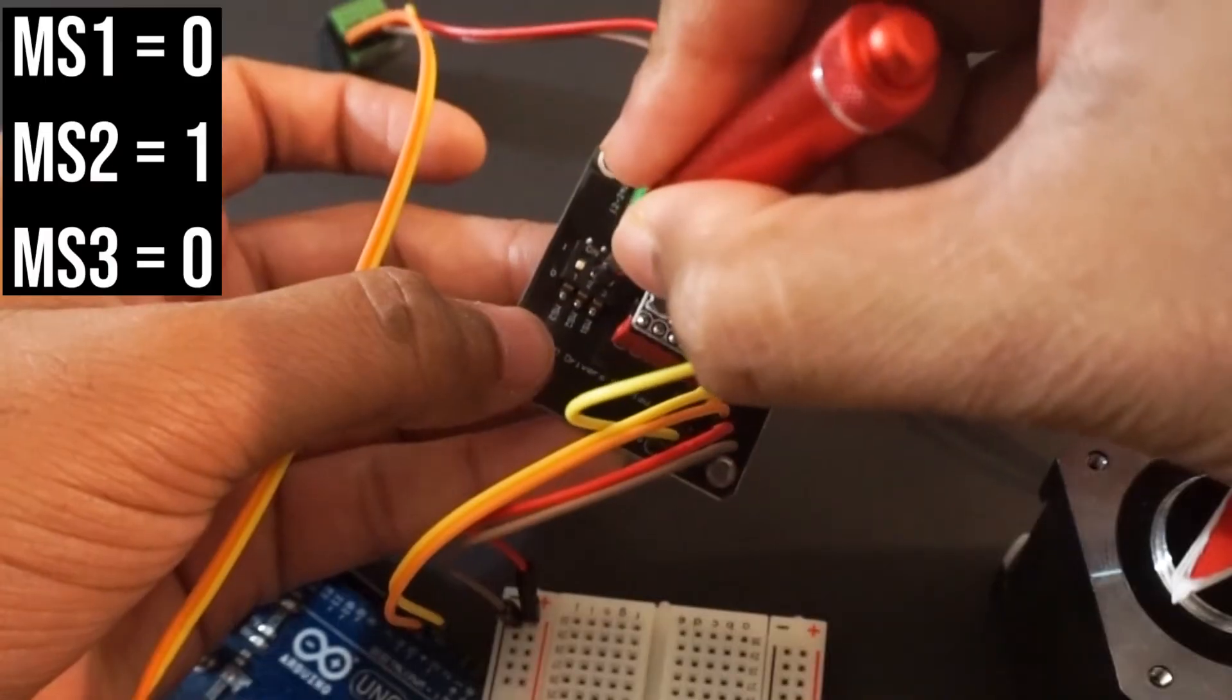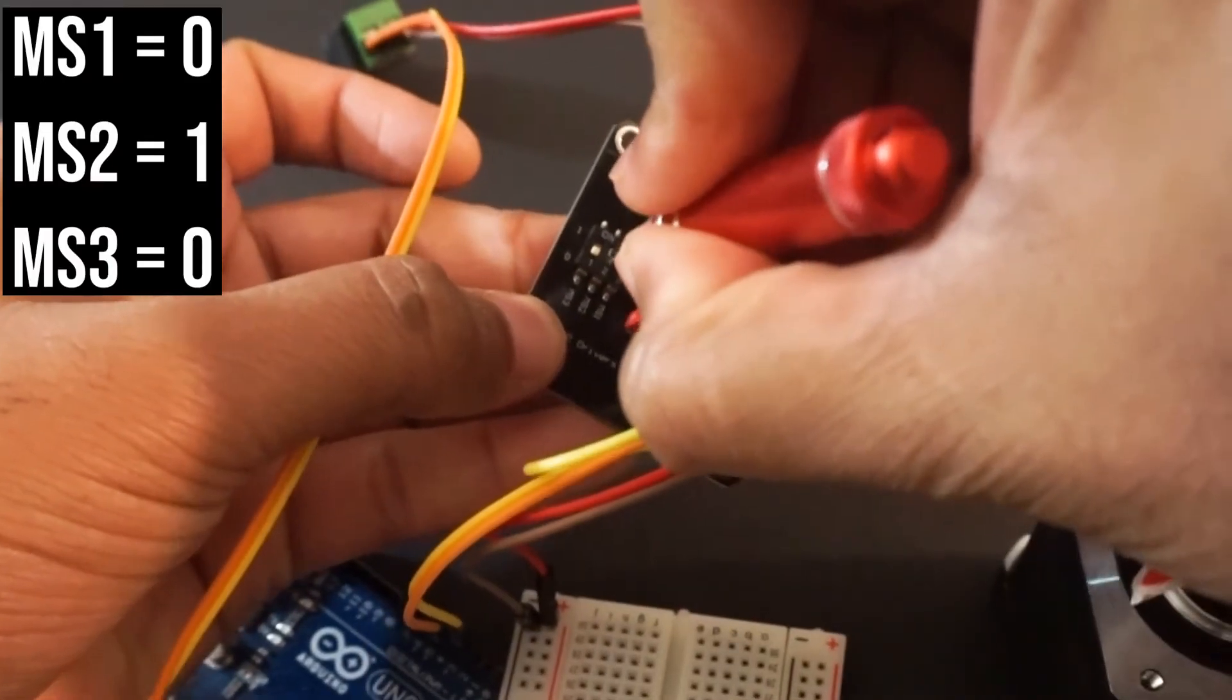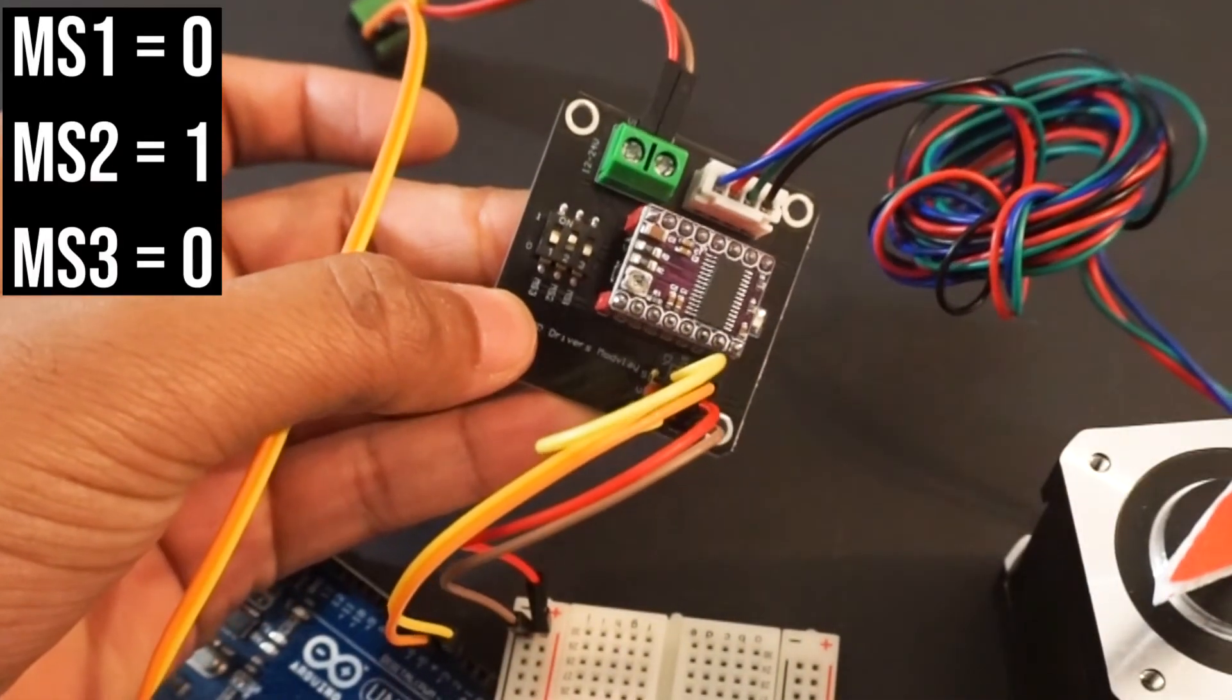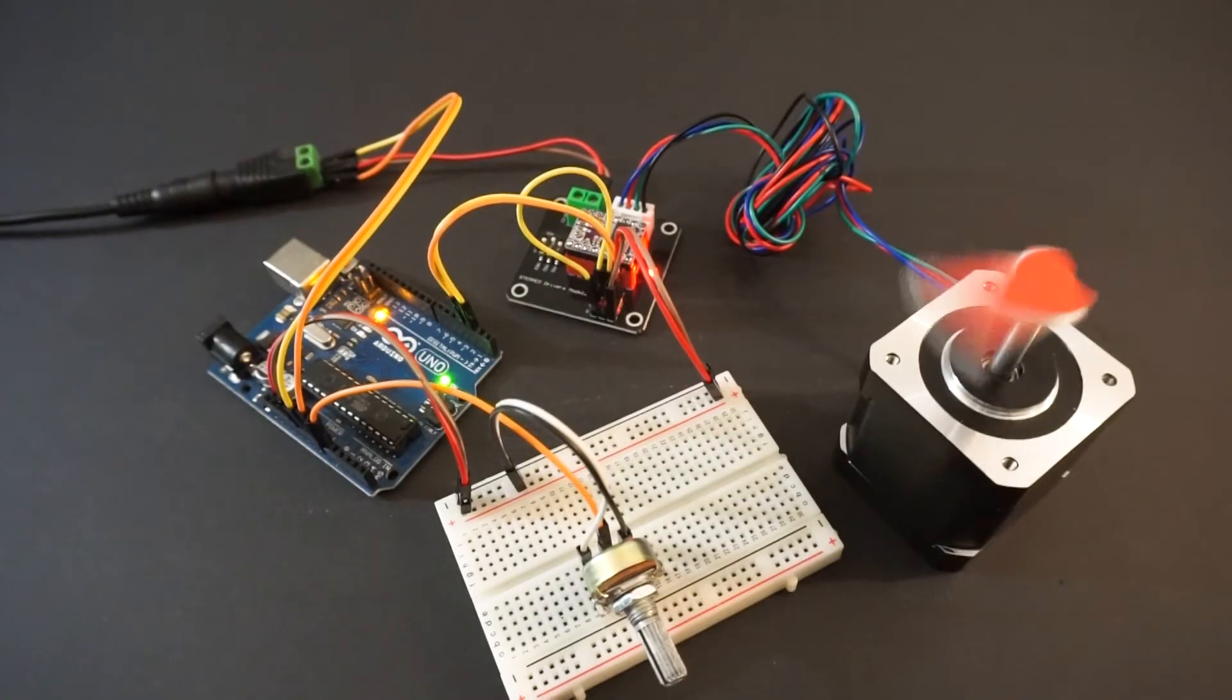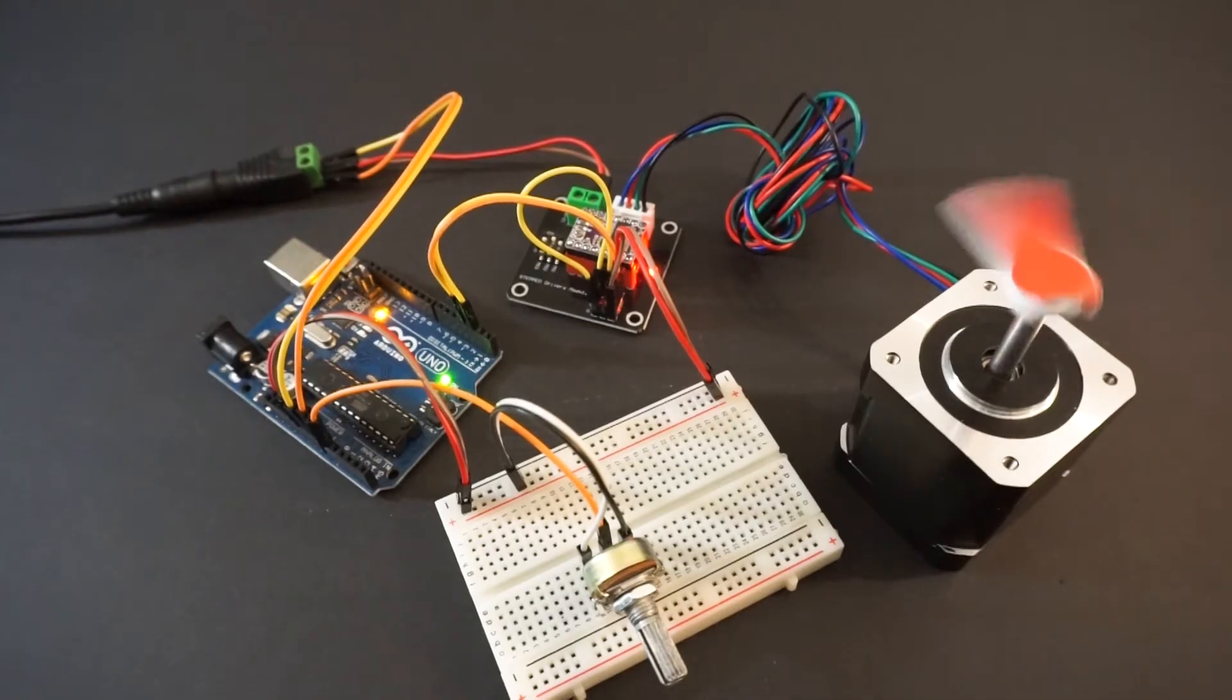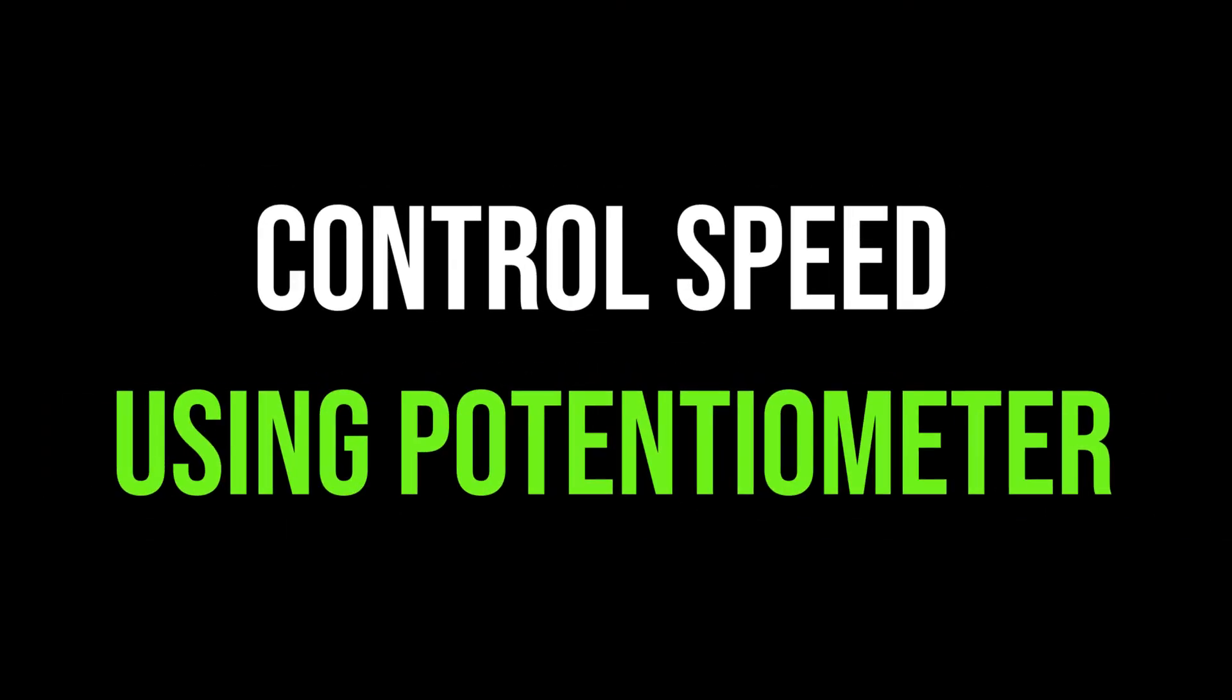We will be using micro stepping mode as one-fourth by setting MS2, which is the middle pin, as one. This avoids lots of issues with stepper motor. That's it, let's see how it works. As you can see, stepper motor is rotating with constant speed which we have set in code.